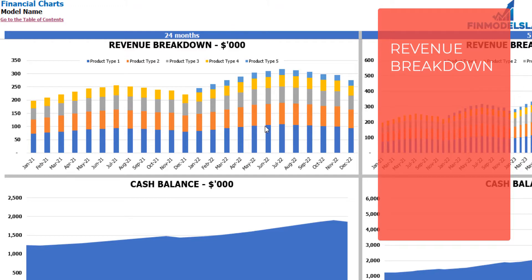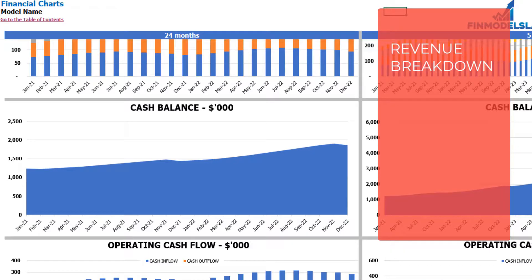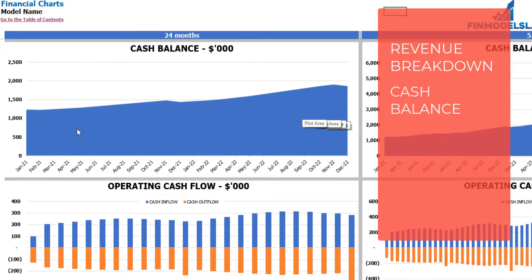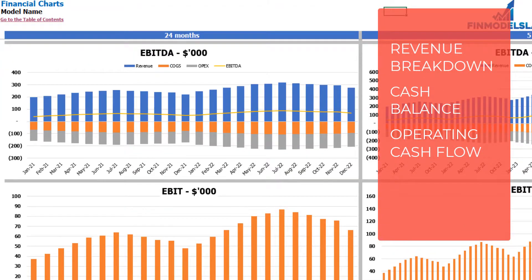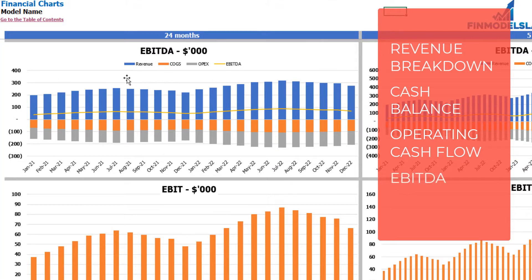The top couple of charts will show you the revenue breakdown by product types. The next couple of charts will show you the cash balance for 2 years and for 5 years. The next couple of charts will show you the operating cash flow broken down by cash inflow and cash outflow. The next couple of charts will show you the EBITDA breakdown — which is revenue, COGS and OPEX — and finally as a yellow line you may see the resulting EBITDA value by months.